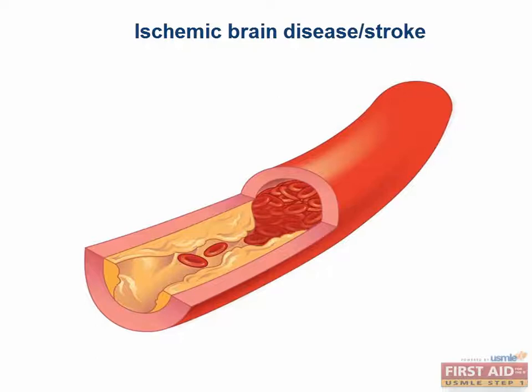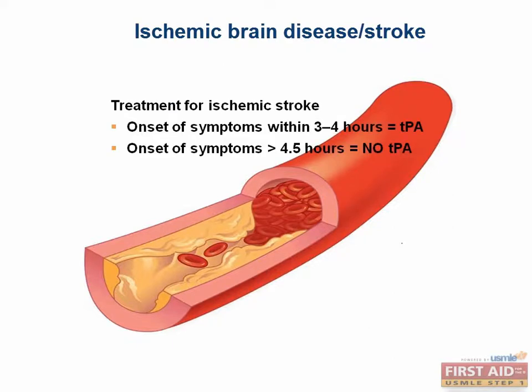The treatment for ischemic stroke is to give TPA, but only if the onset of symptoms occurred within three to four hours. After 4.5 hours, the risk of an intracranial bleed with TPA outweighs the possible benefits. You should definitely remember that time course.